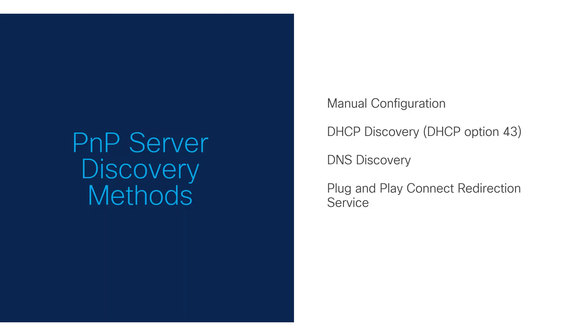For Network PNP to work, PNP-enabled devices must locate the PNP server. The devices can find this server in several ways. The first is by manual configuration, entering the details about the server directly into the device. Beyond that, the server can be found through DHCP Discovery, DNS Discovery, or PNP Connect Redirection Services.